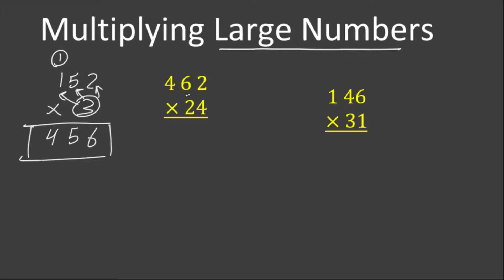But today we are going to work on multiplying large numbers, such as three-digit numbers by two-digit numbers. The examples we have here are three-digit numbers multiplied by two-digit numbers. We first work on the digit in the ones place and multiply it by all digits at the top. 4 times 2 is 8. 4 times 6 is 24 — write 4 here and carry 2 above the hundreds place.